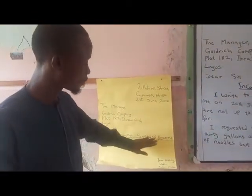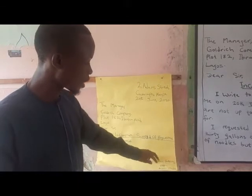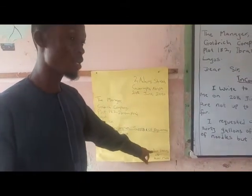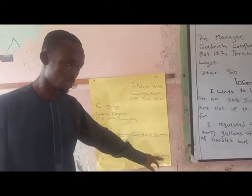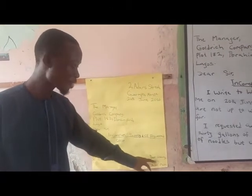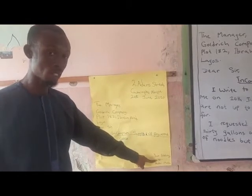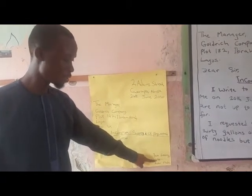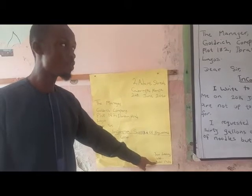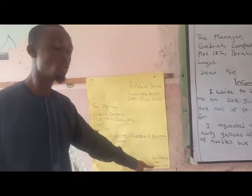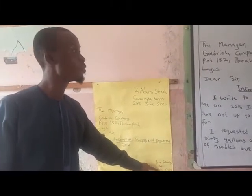Now after the writer has talked about whatever he has to say, you will come to the closing. And remember, for a formal letter the closing should be 'Yours Faithfully.' After you have done that, you will then sign. Remember, in this type of letter you sign. Then you will write your name. Your name is going to include your surname — that is, you are writing your full name.